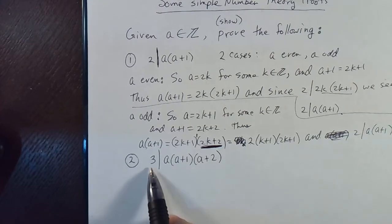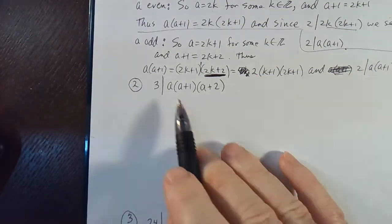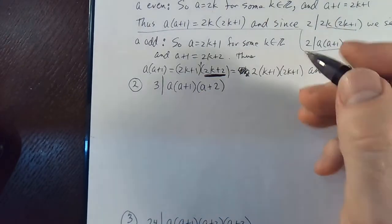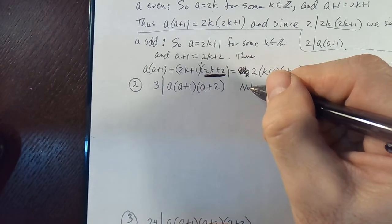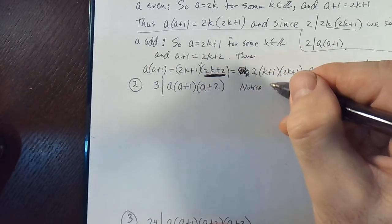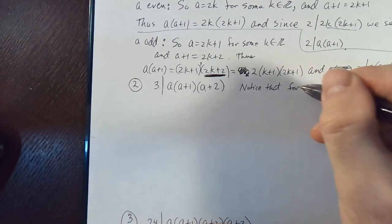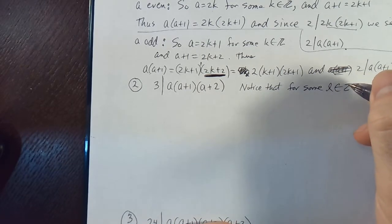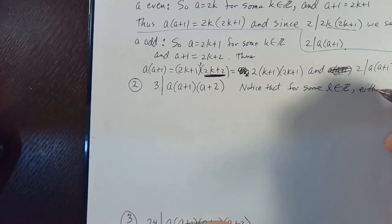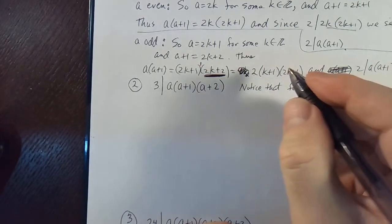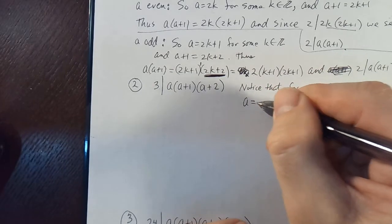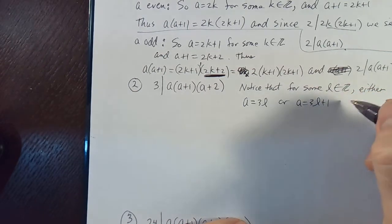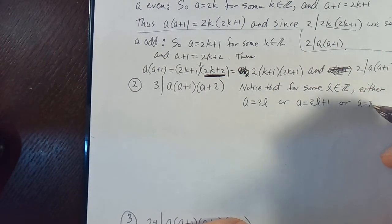The next one: we want to prove that three divides a times a plus one times a plus two. We really have three choices. For some l in the set of integers, either a equals 3l, or a equals 3l plus one, or a equals 3l plus two.